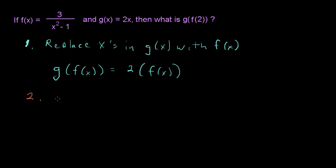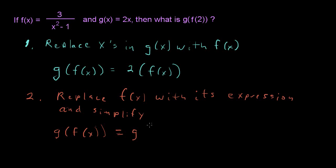Step number 2 will now replace the f(x) with its expression and then simplify. So we're going to replace f(x) with its expression and f(x) is equal to 3 over x squared minus 1. We're going to replace or plug in that into what we've written up above. So let's just rewrite the g of f(x) and now do the replacement. And so we'll have instead g of what f(x) is equal to, which is the 3 over x squared minus 1.